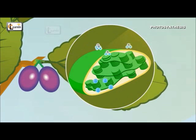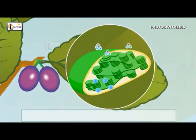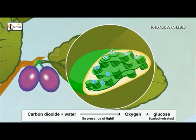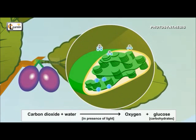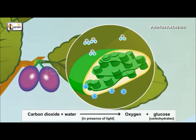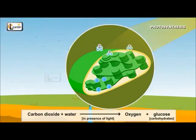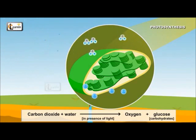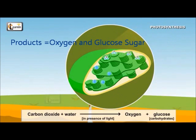The following reaction takes place in the leaves of the plant during photosynthesis: carbon dioxide plus water, in the presence of light energy, results in oxygen plus glucose, or carbohydrates. The products formed are glucose and oxygen. Carbohydrates, which are a form of glucose, are synthesized from carbon dioxide and water.